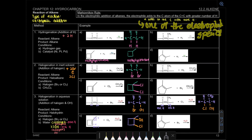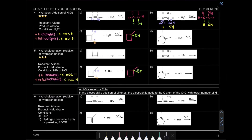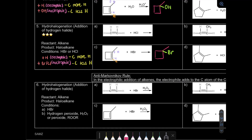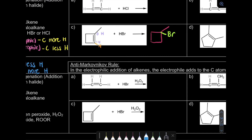For anti-Markovnikov, it is the reverse - the electrophile adds to the carbon with fewer hydrogen. This applies specifically to HBr with H₂O₂ (peroxide) as the reagent. Here hydrogen adds to the carbon with less hydrogen, and bromine adds to the carbon with more hydrogen - the opposite of the Markovnikov rule.